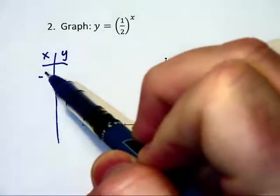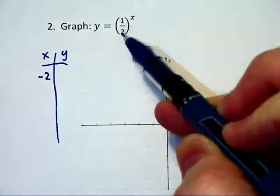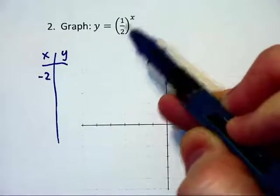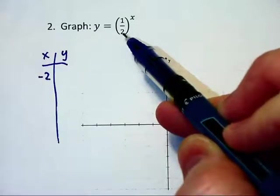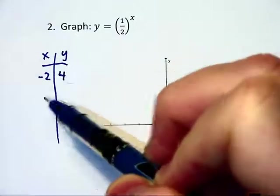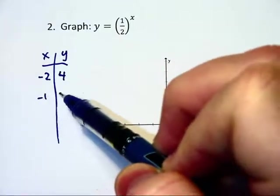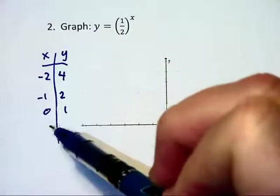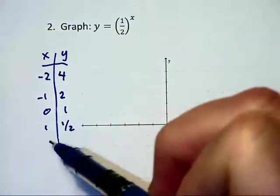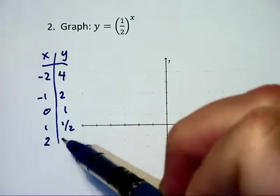If I have a negative 2 exponent, 1 half to the negative 2, I get 1 to the negative 2 and 2 to the negative 2 power. That's actually going to give us 4. Negative 1 will give us an output of 2, 0 an output of 1, 1 an output of 1 half, and 2 an output of 1 quarter.